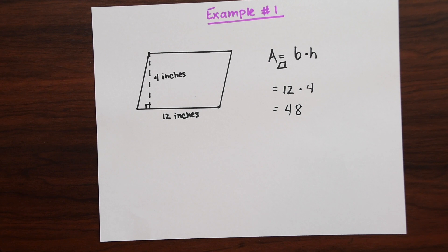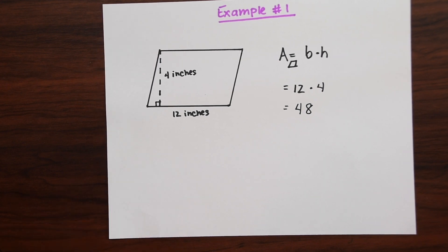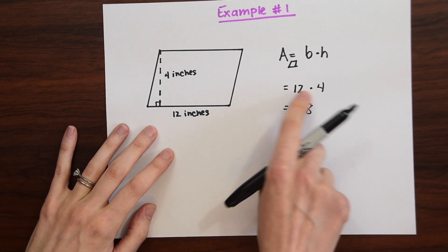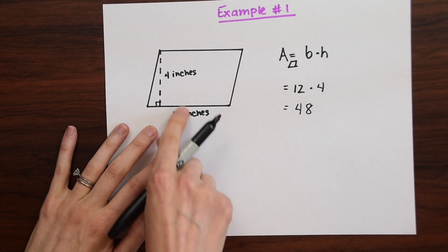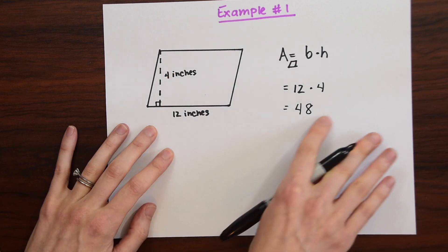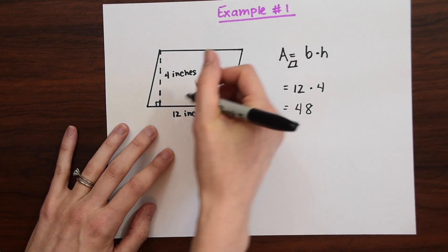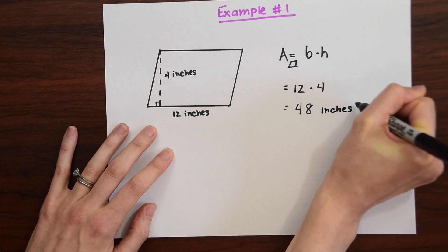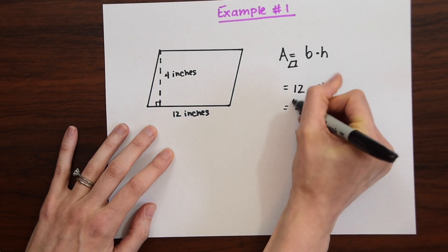So plug these into your calculator and you're going to get 48. So just something to keep in mind that's important when finding the area of a parallelogram. Because we're multiplying these two numbers together we want to show that in the label when we put this together. So this is in inches so we're going to have inches squared. And that's our answer.